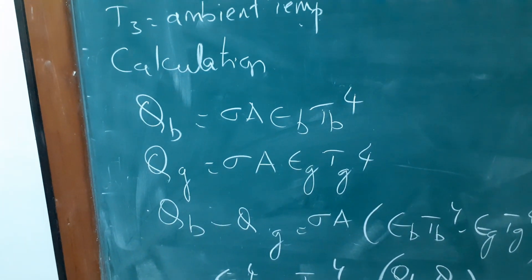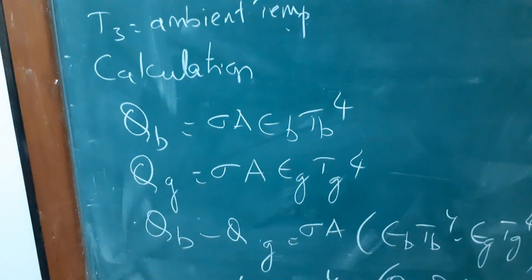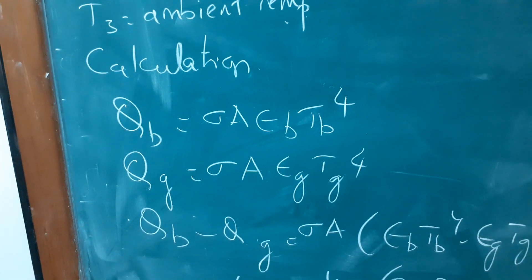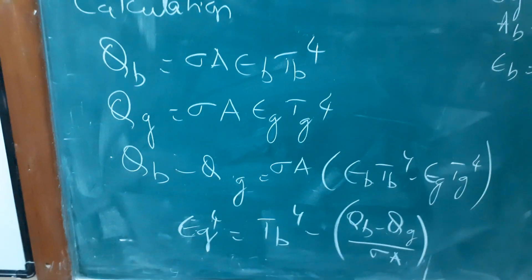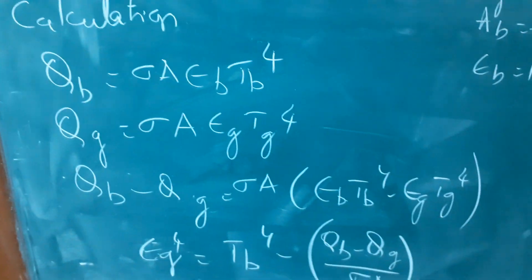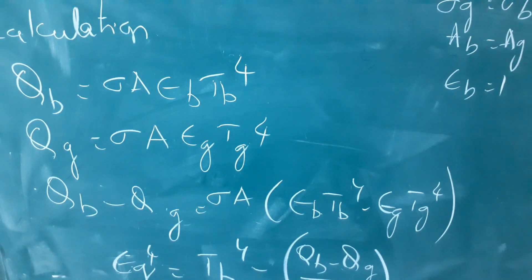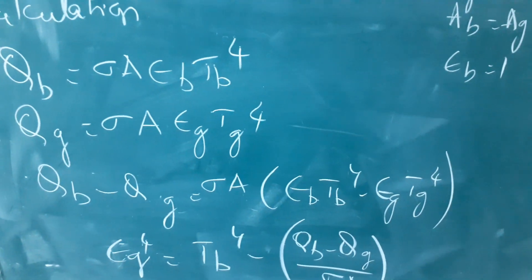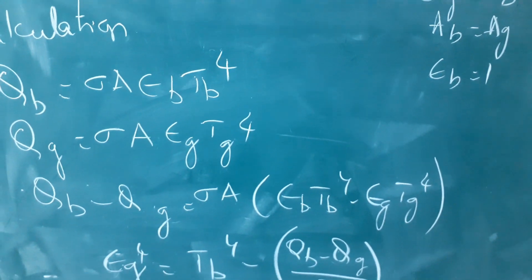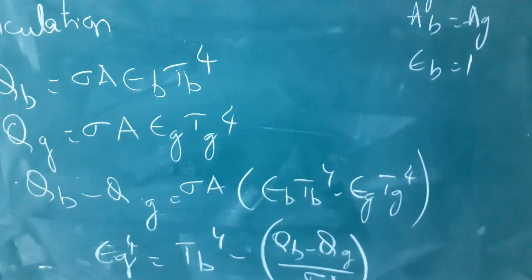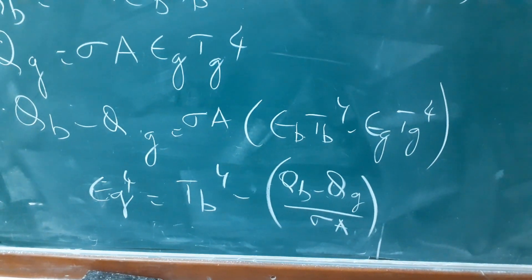Okay, similarly, calculate heat transfer for gray body: sigma A epsilon G TG to the power of 4. Now find the difference, the heat transfer between black body and gray body. So you will get QB minus QG is equal to sigma A epsilon B TB to the power of 4 minus epsilon G TG to the power of 4. So you will get this equation.